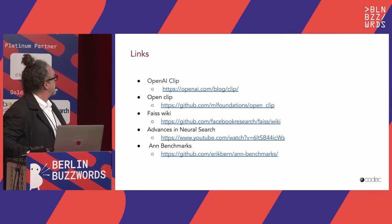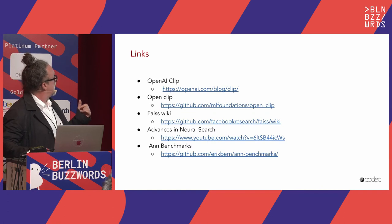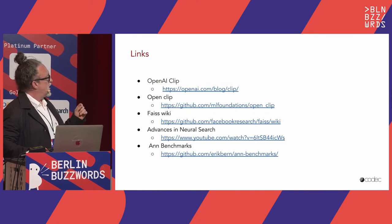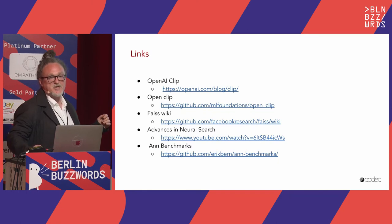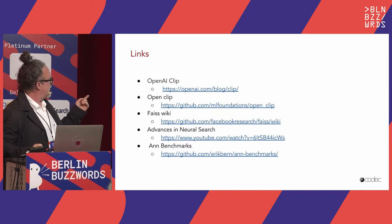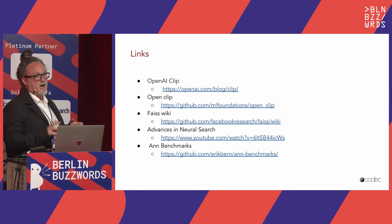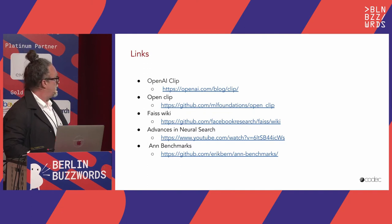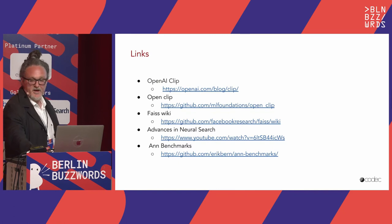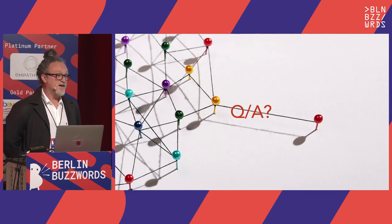I have a bunch of links that should be very useful: the original OpenAI CLIP paper, the OpenCLIP GitHub repository, the FAISS wiki from Facebook Research (an entry point to most approximate KNN research), a link to a recent advanced neural search talk, and a very interesting benchmark GitHub repository that compares all these different ANN methodologies. Thanks very much, and if you have any questions, please ask.